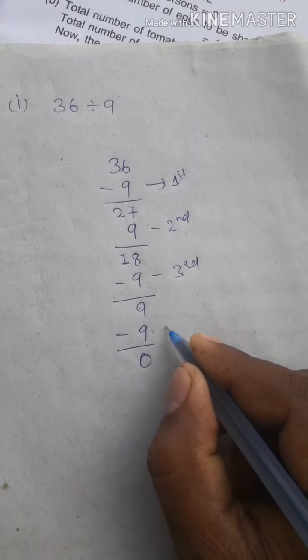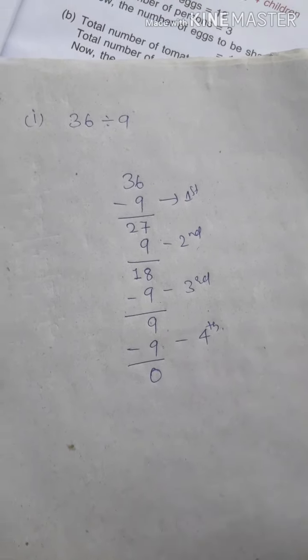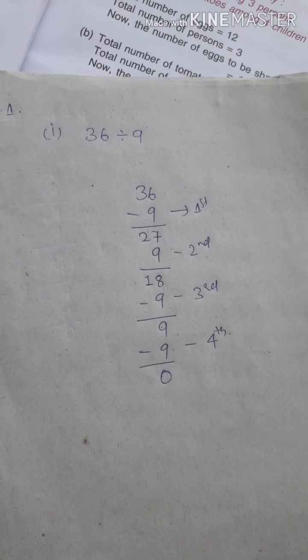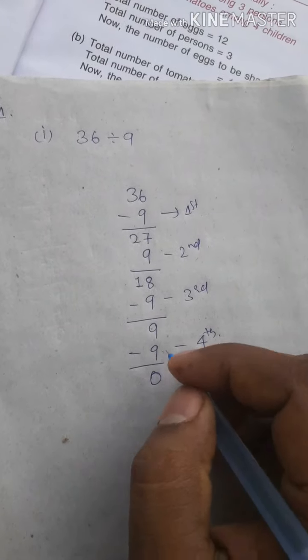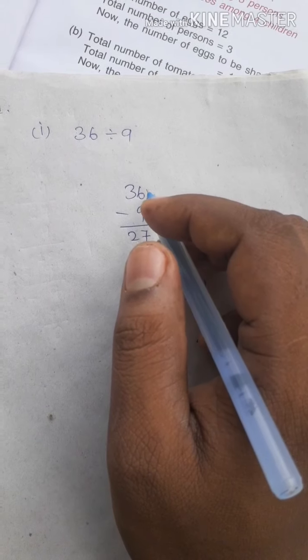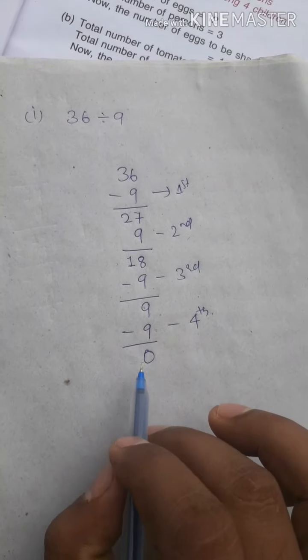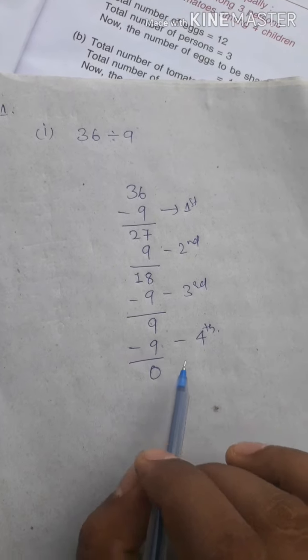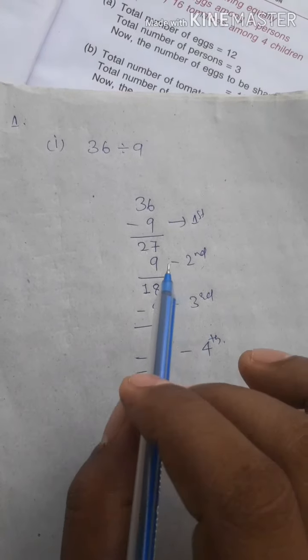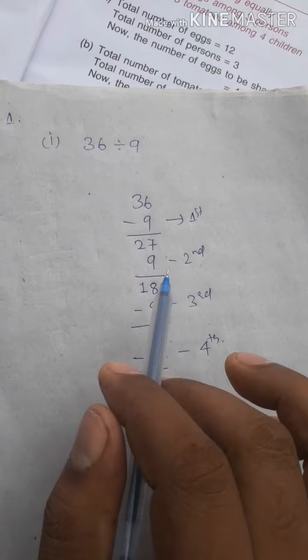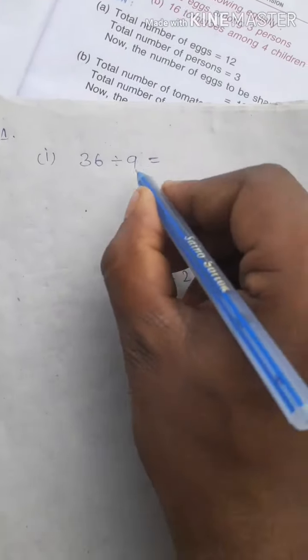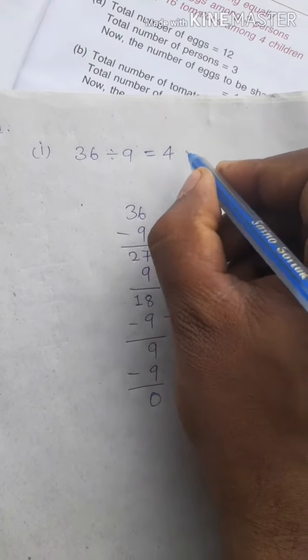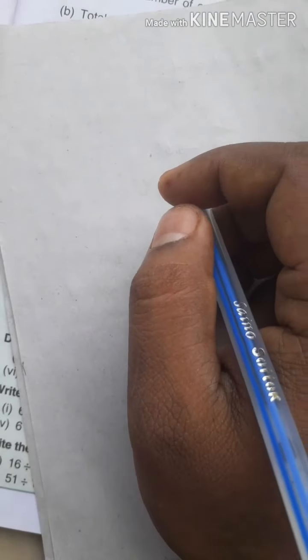First time, second time, third time, and the fourth time. Actually, we have to subtract 9 four times from 36, then we will get 0. Once again, we have to subtract 9 four times to get 0. Which means 36 divided by 9 is equal to 4.